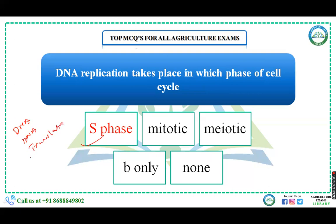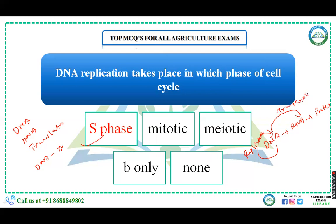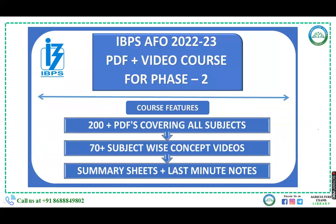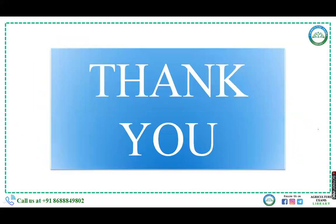DNA replication is the formation of DNA from DNA. If protein is formed from RNA, that is translation, and this process is part of the central dogma. This is very important for FCI examinations. In the next video we'll bring more questions from genetics topics, and we'll also move to human physiology, plant anatomy, and cover as much of botany and zoology as possible for the FCI examination.